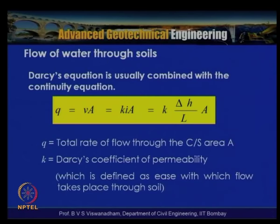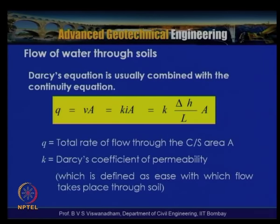The total rate of flow through cross-sectional area A is q, and K is Darcy's coefficient of permeability. This coefficient is defined as a property of the soil representing the ease with which water can flow through it — some soils allow water to flow very easily, others make it very difficult. This property is used extensively in constructing geotechnical structures.